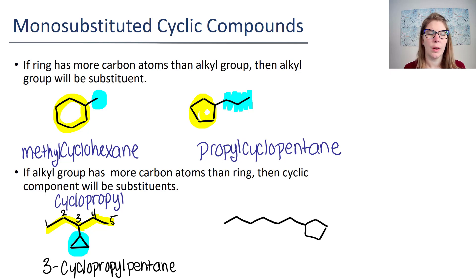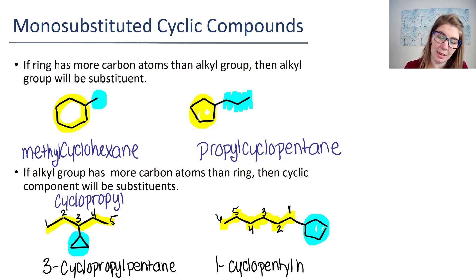All right, let's look at the next one. For the next one I have one, two, three, four, five, six carbons in my straight chain and five carbons in the ring, so the ring again is going to be the substituent. For your straight chain, you have at the first position is where your ring is attached—so one, two, three, four, five, six—and we would call this 1-cyclopentylhexane.